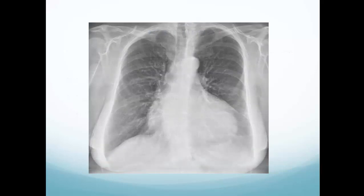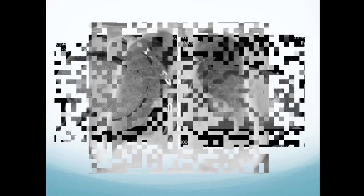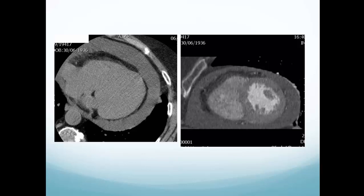On chest X-ray, when the heart is very globular and round — what's called the water bottle sign — you have to think about pericardial effusions. The CT appearance shows the epicardial fat, the right coronary artery running within it, and the two layers of the pericardium split to give rise to a collection. When the effusion is this size, it's easy to distinguish fluid from thickening by placing a region of interest.